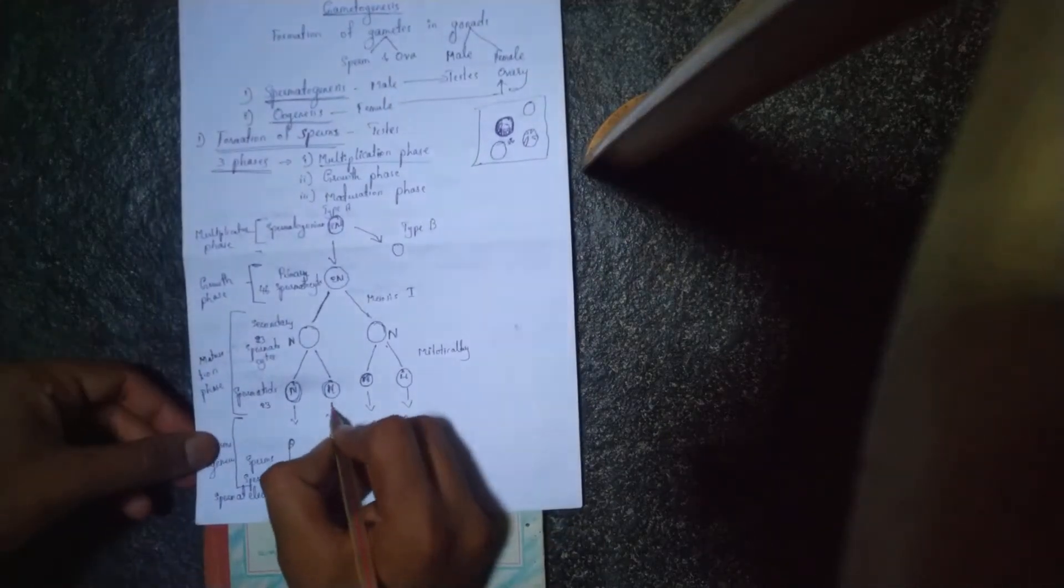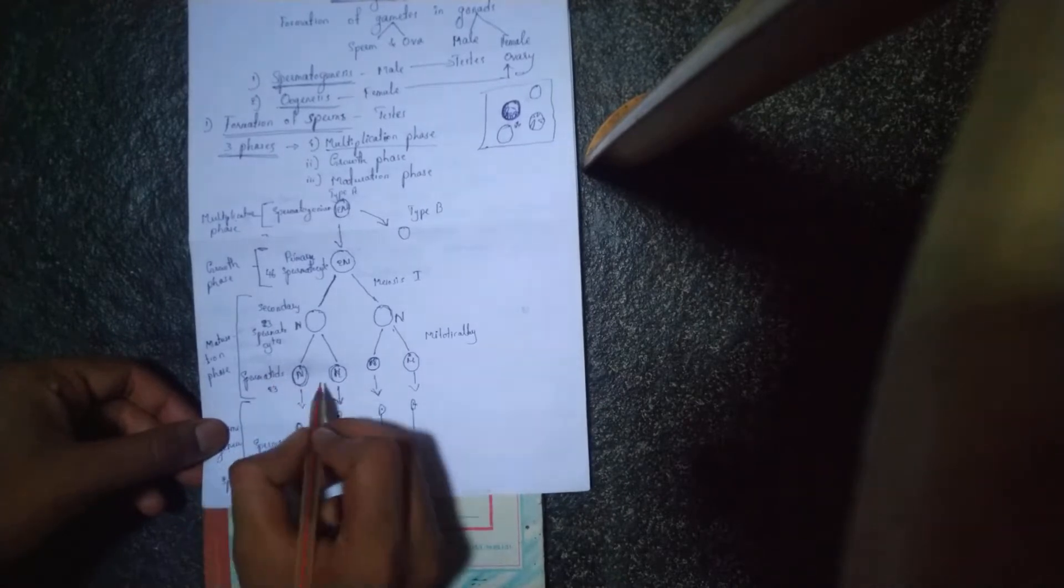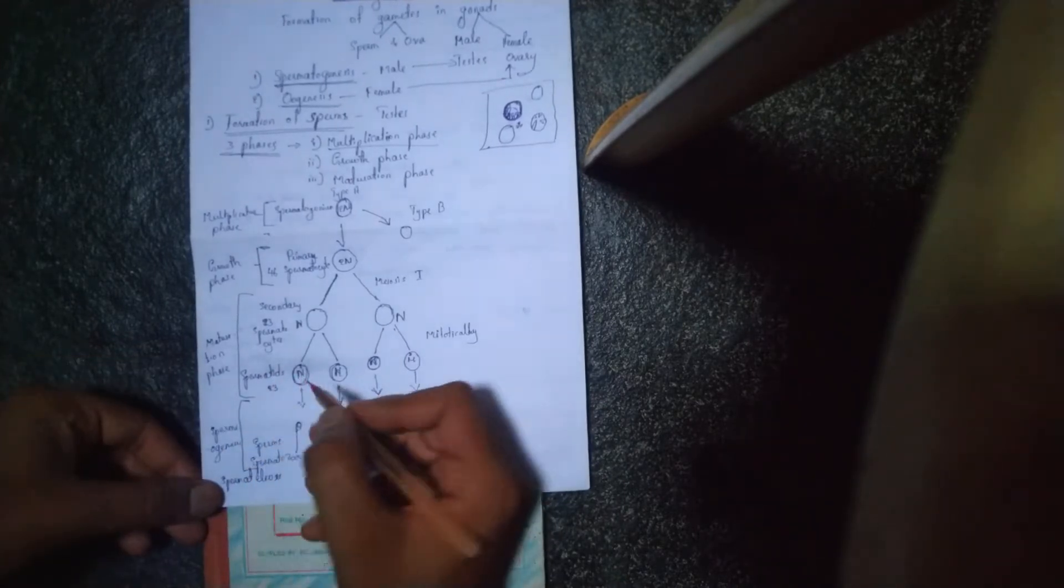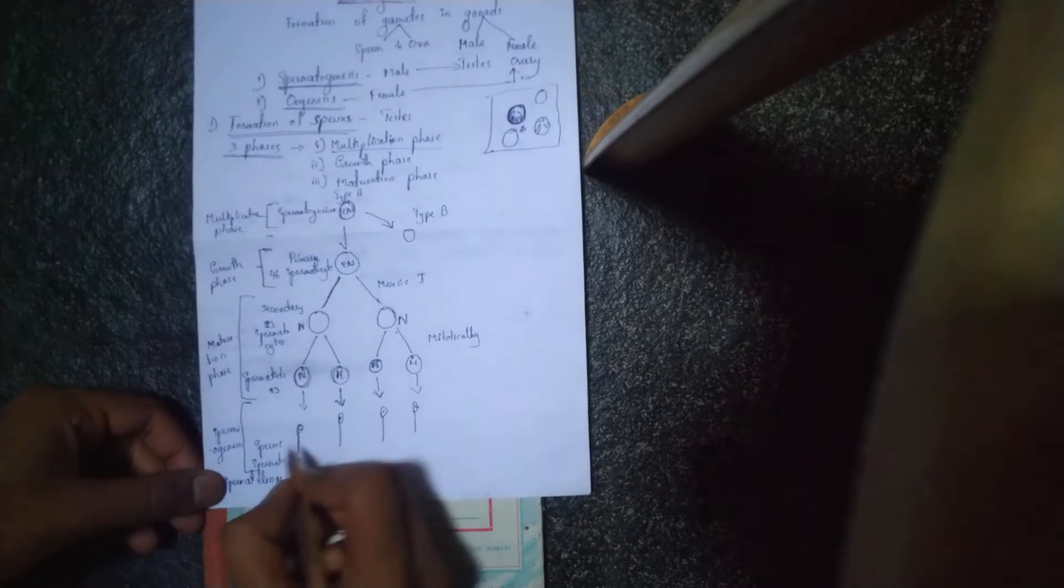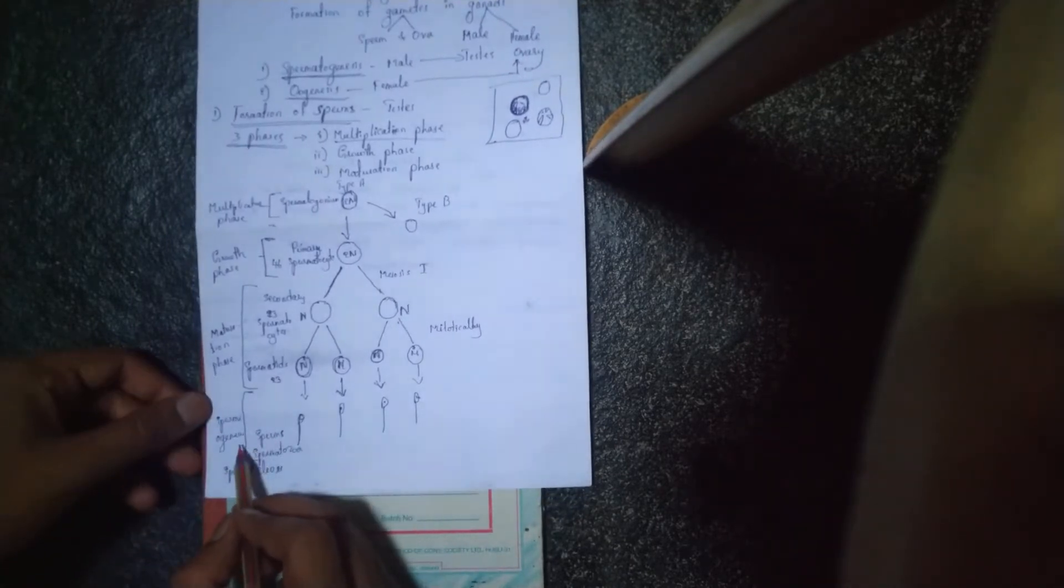This is the continuation video of the last video where we stopped at spermatids. These spermatids develop as sperms or spermatozoa, and this process is called spermiogenesis.